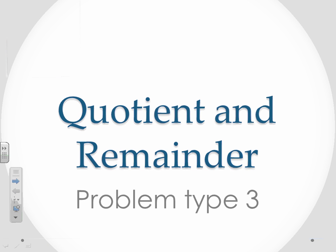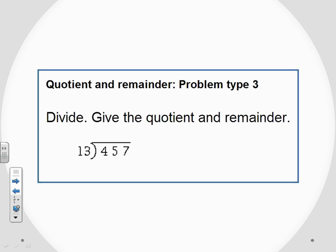For this video we're going to take a look at the third and final problem type for the quotient and remainder series. Our example here, we're asked to divide to give the quotient and the remainder when we divide 13 into 457. So we definitely want the long division set up here, 13 into 457.